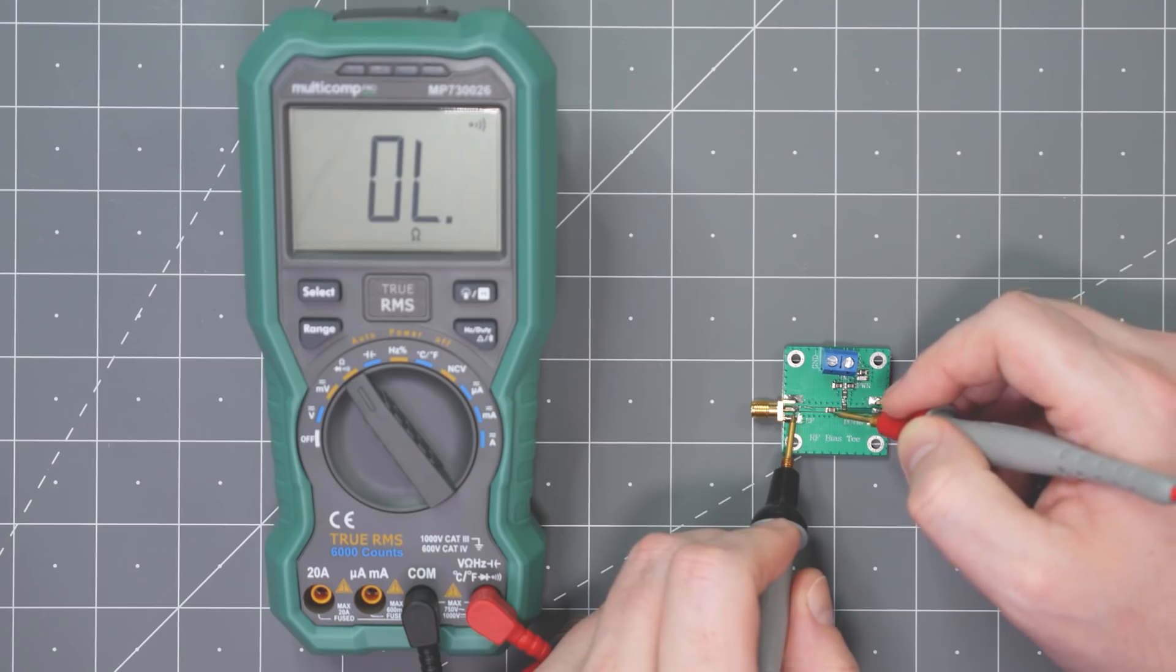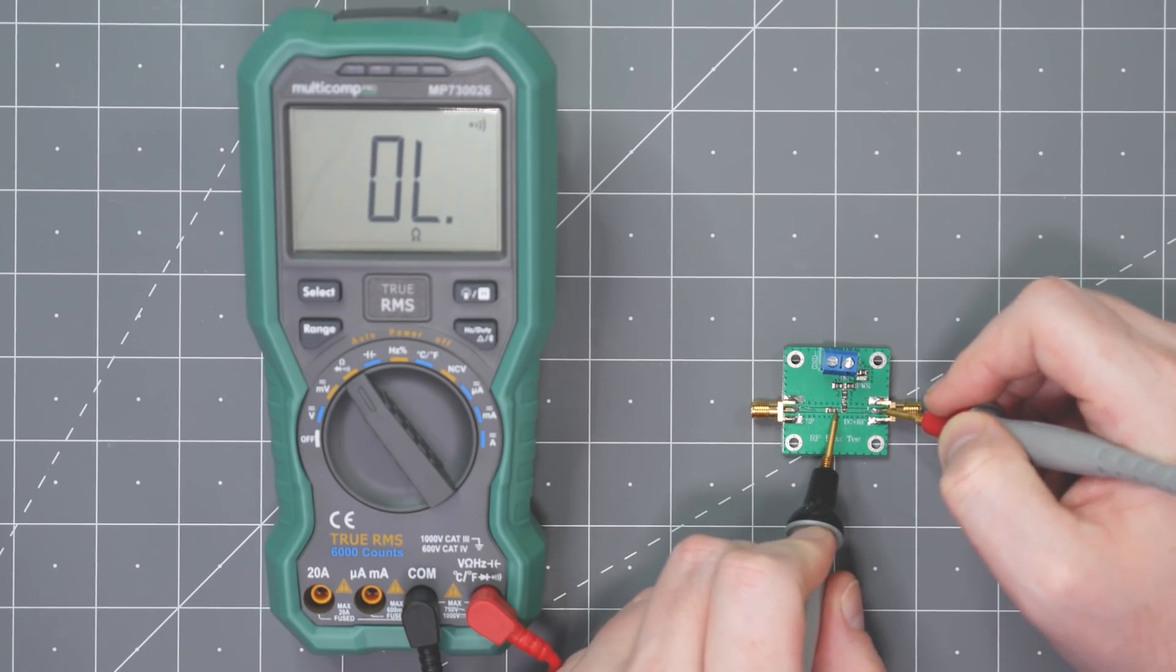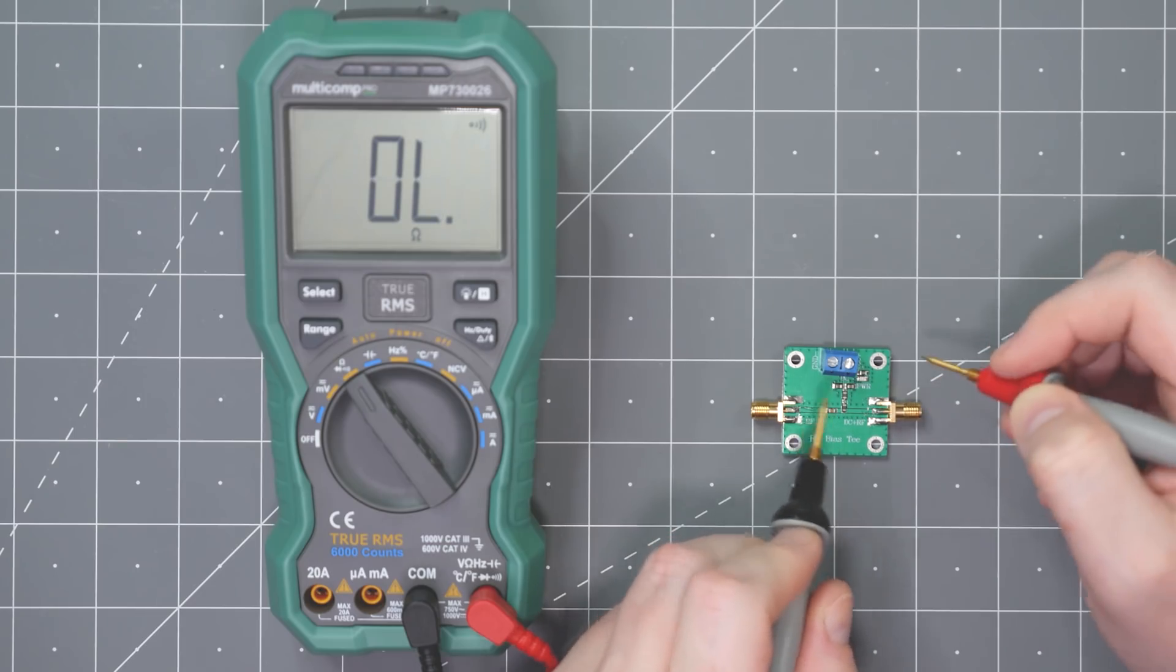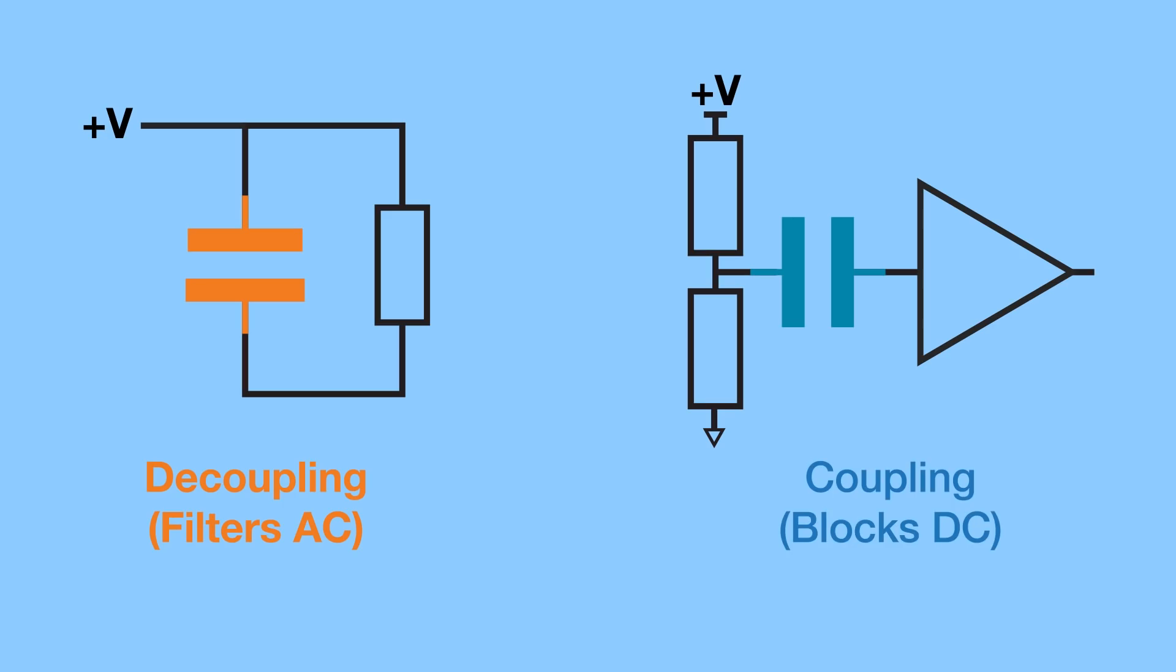But, just like we saw earlier, capacitors block DC. So, if we are testing a circuit board that has DC blocking or coupling capacitors on the traces, you will not see a short. Keep in mind that coupling and decoupling capacitors are different. Decoupling capacitors are in parallel to most signals, while coupling capacitors, or blocking caps, are in series.